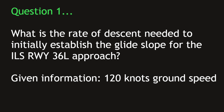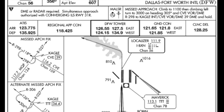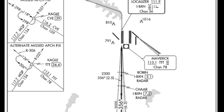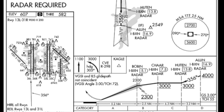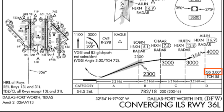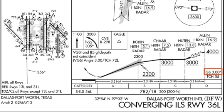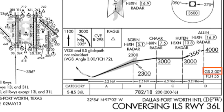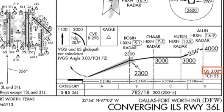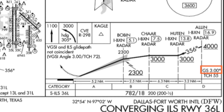The questions often include a given speed. In this case, we will be traveling at 120 knots per hour, and we will also be provided some figures to help with finding the answer. Here we are looking at the applicable approach plate for the ILS runway 36L approach. Towards the bottom right area in the profile view, you will see a small piece of text stating GS 3.00 degrees — that's saying this approach uses a glide slope angle of 3 degrees.